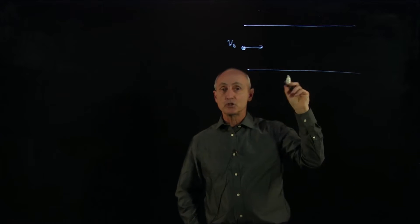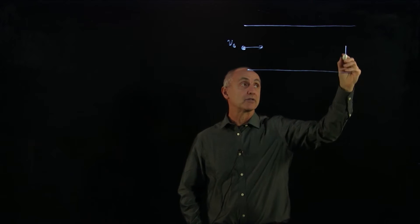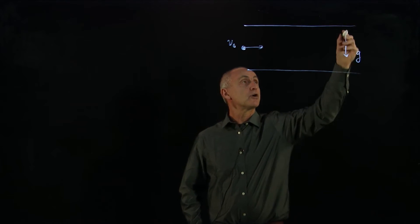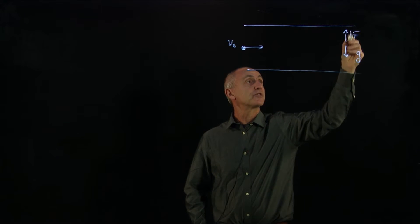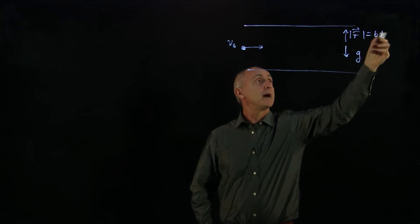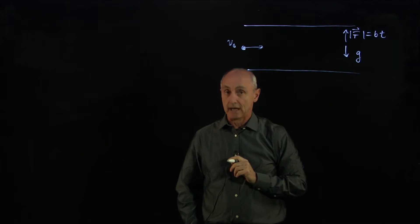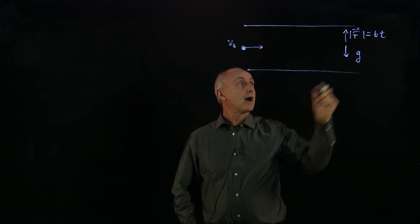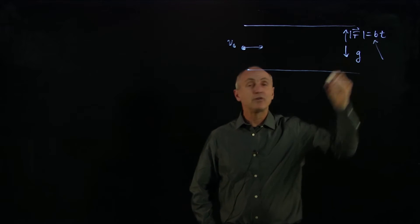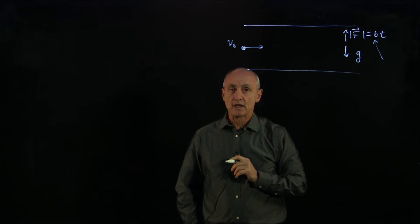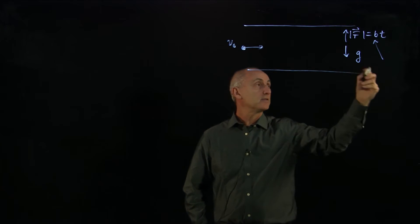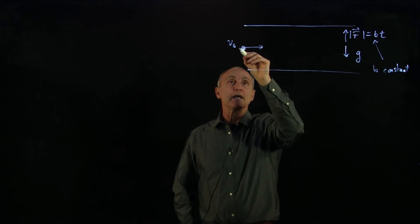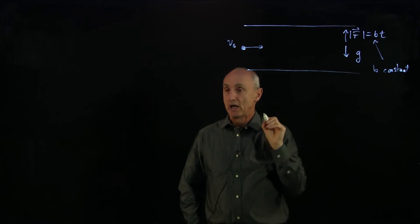In this problem, there are two types of forces that are going to act on this particle. There's a gravitational force down, and we're going to talk about some constant force upwards whose magnitude is changing in time. What I'd like to know is how strong does this force have to be — where b is a constant — in order for the particle to not hit the bottom.